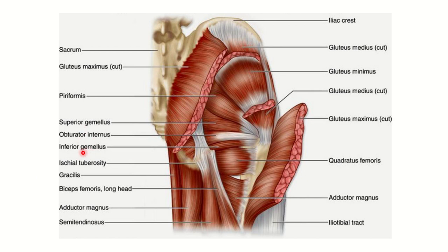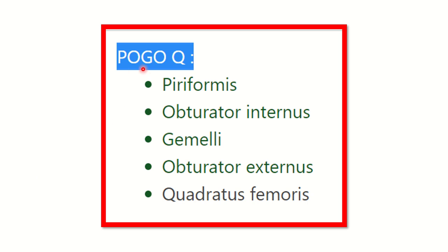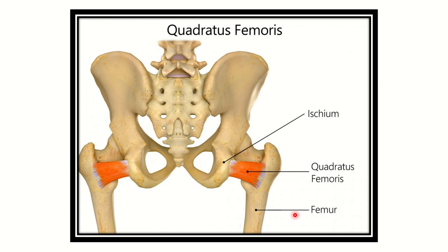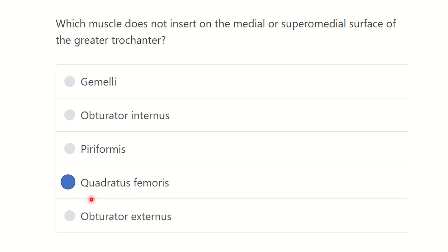Obturator Internus, Gemellus Superior, Gemellus Inferior, Piriformis, and Obturator Externus all attach to the greater trochanter of the femur. But the Quadratus Femoris attaches to the upper part of the femur at the intertrochanteric line — not to the greater trochanter. Here we can see the greater trochanter and the lesser trochanter, and the Quadratus Femoris attaches along the intertrochanteric line. So our answer is Quadratus Femoris, because it does not attach to the greater trochanter. Thank you all.